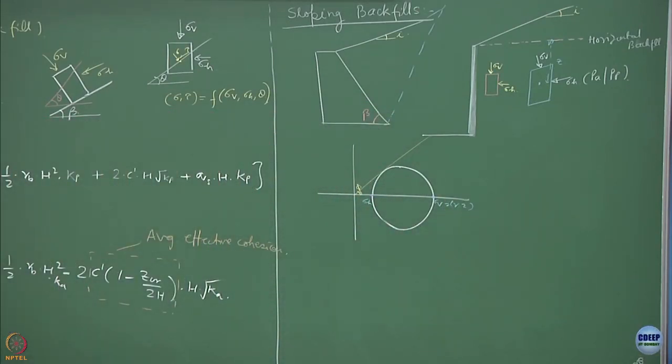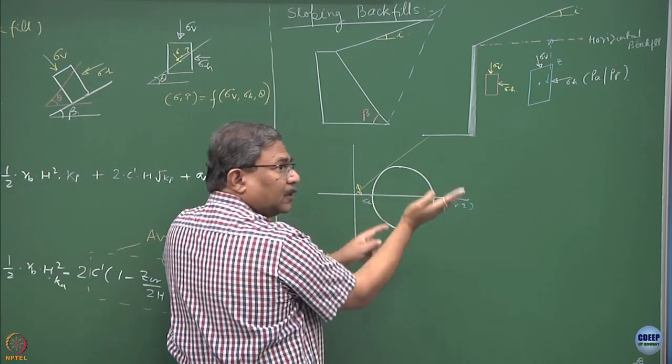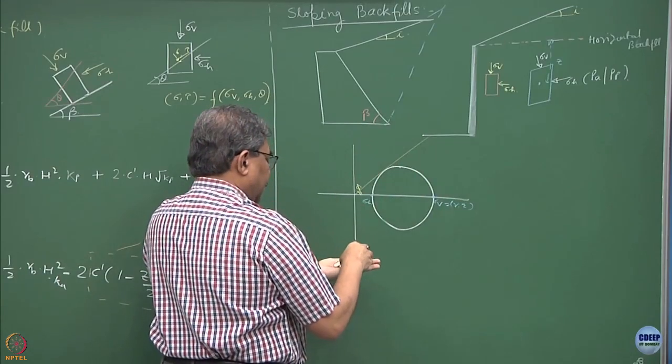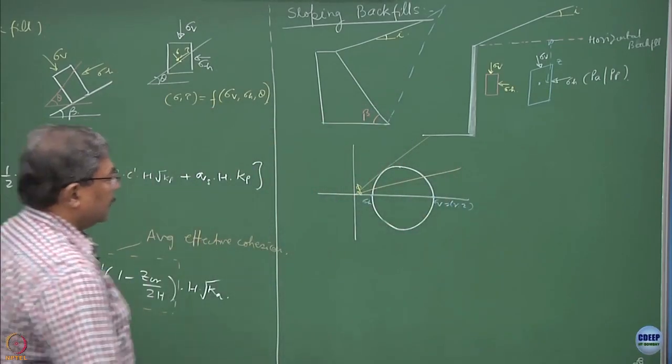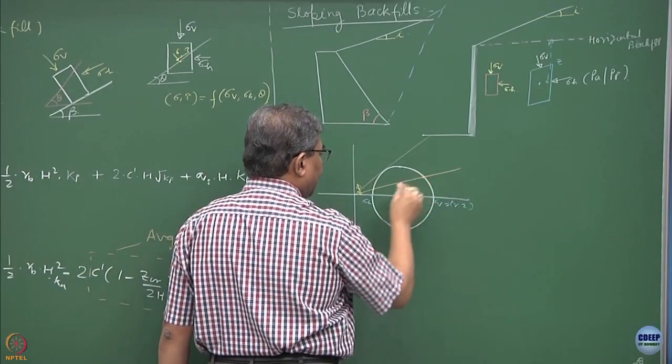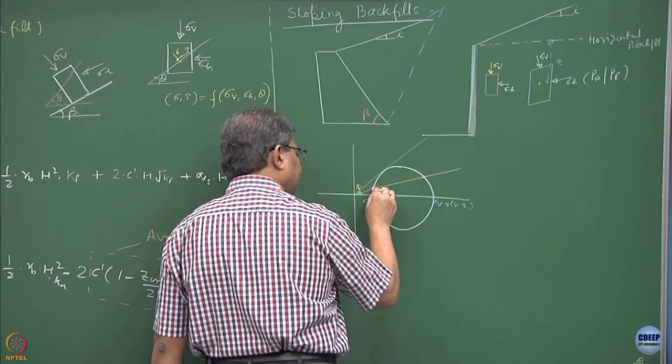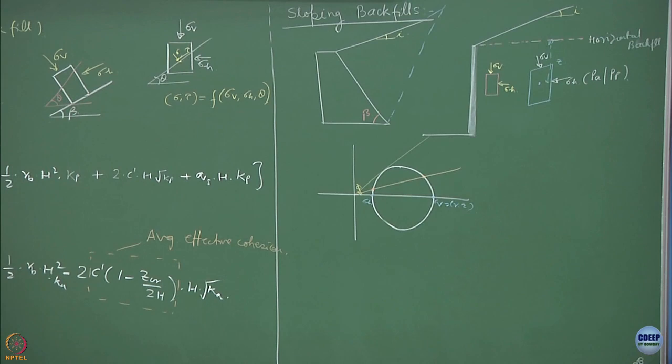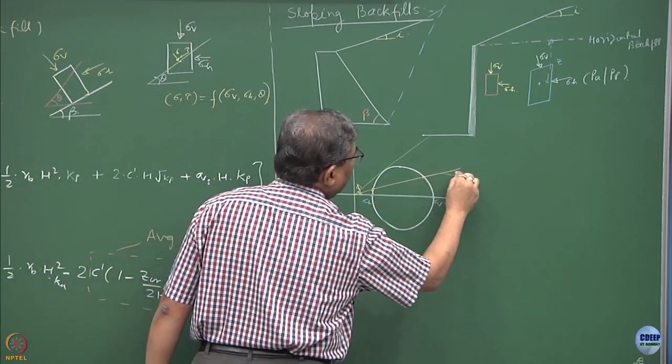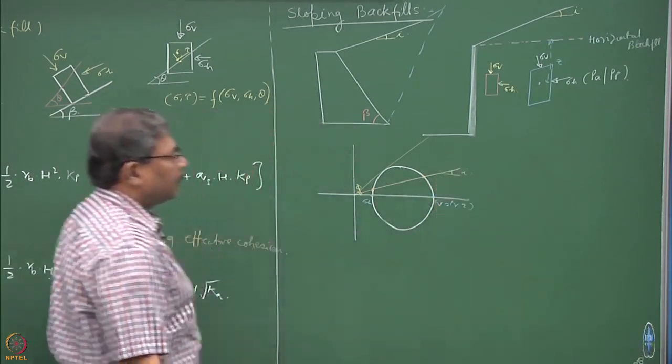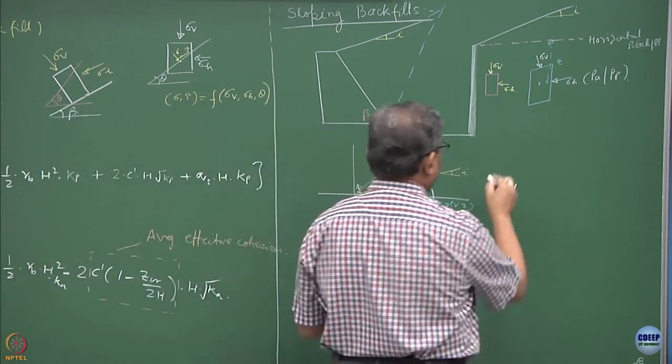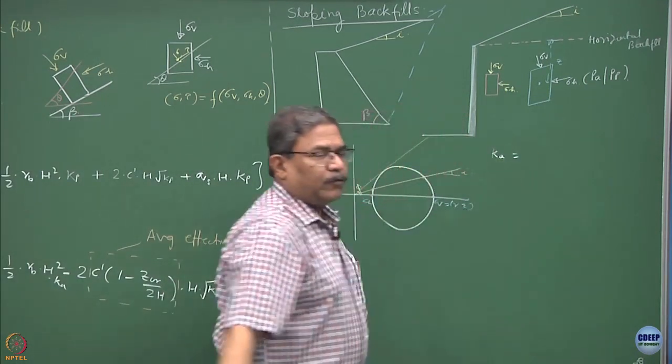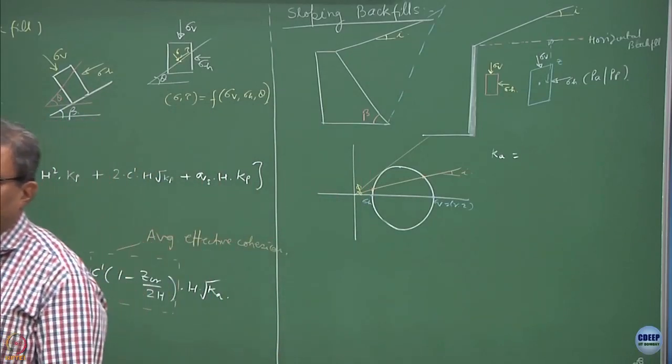Now, what has happened because of rotation with i angle, the state of stress which you have shown as sigma h, sigma v has got rotated. So this is the new state of stress which is going to act. This sigma v has gone from here to here, and sigma h has gone from here to here. That is the only difference and this inclination is i. So what I need to find out, I need to find out Ka, coefficient of earth pressure under active earth pressure condition.